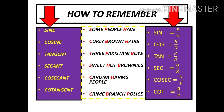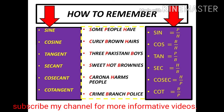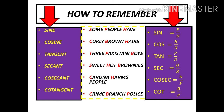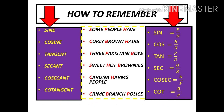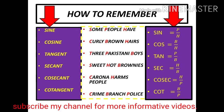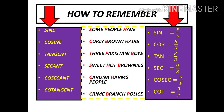After sec, we have the next trigonometric ratio which is cosec, related to the sentence about corona. Cosec is equal to "Corona Harms People". C is for cosec, H is for hypotenuse, and P is for perpendicular. So cosec equals hypotenuse upon perpendicular. Corona will be written in history, and cosec also.